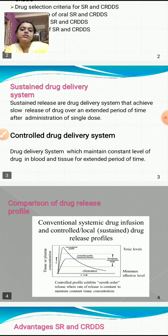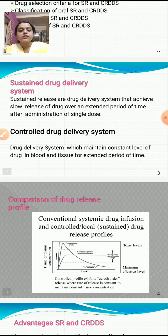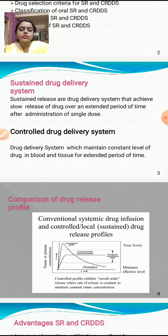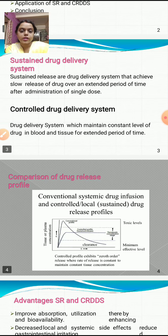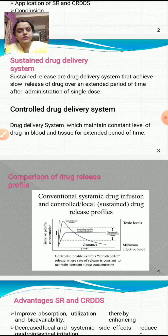Sustained release drug delivery systems achieve slow release of drug over an extended period of time after administration of a single dose. Controlled release drug delivery systems, on the other hand, maintain a constant level of drug in blood and tissue for an extended period of time.